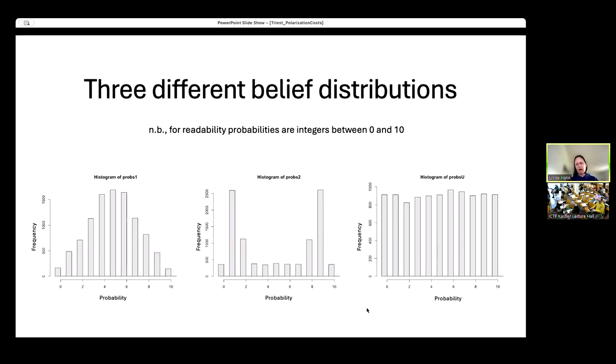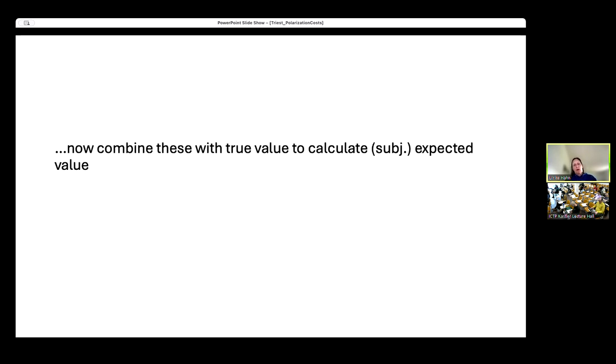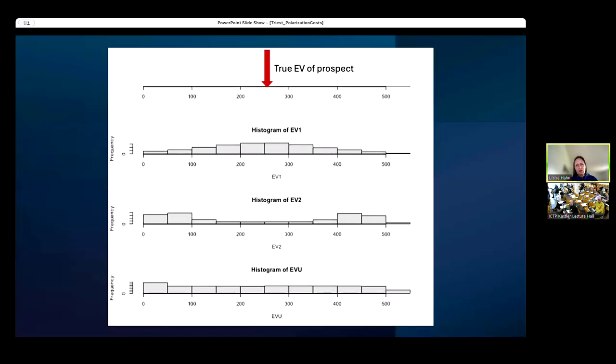I'm going to compare these different belief distributions in their impact on the decision making of this collective. So I'm going to take these distributions of beliefs about the uncertain event in question and combine these with the true value to calculate subjective expected values. Unsurprisingly, when I do that, those distributions of expected values take on the characteristics of these different distributions.